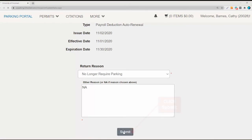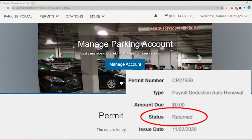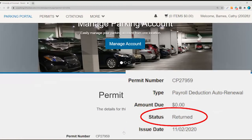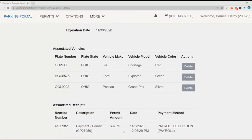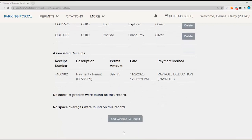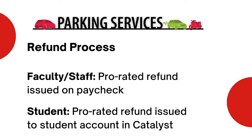The permit details will display and the status will change to Returned. For faculty or staff, a prorated refund will be issued on your paycheck. If you are a student, a prorated refund will be issued to your student account in Catalyst.